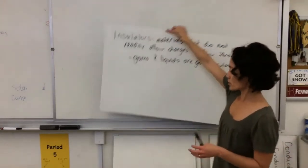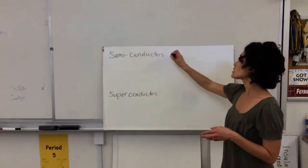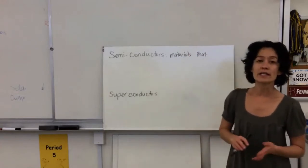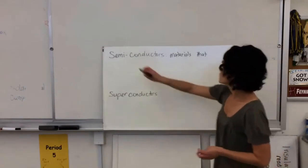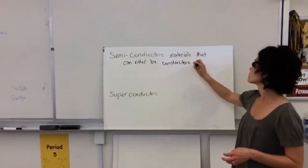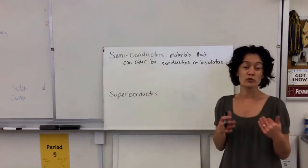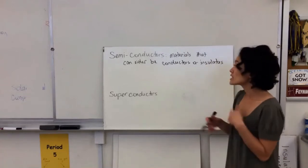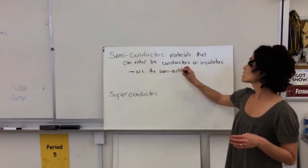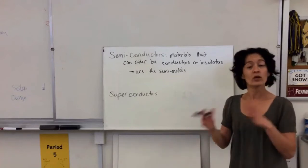There are also in-between materials: semiconductors and superconductors. Semiconductors are materials that can play the role of conductor or insulator depending on their parameters and environment. A semiconductor may behave like an insulator until you give it a certain voltage difference, and once it passes that threshold it behaves like a conductor. The metalloids or semi-metals — silicon being the most popular — are semiconductors, useful in electronics because of that dual conductor/insulator personality.